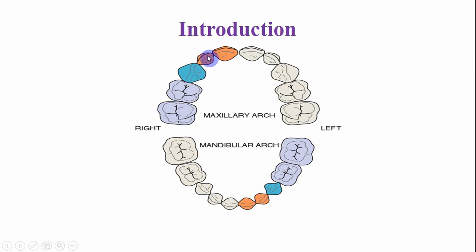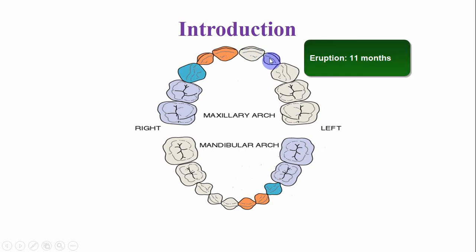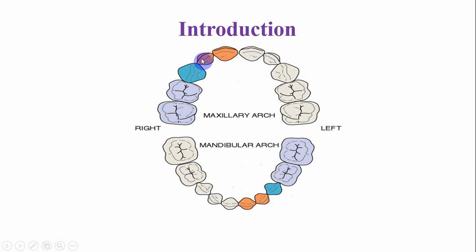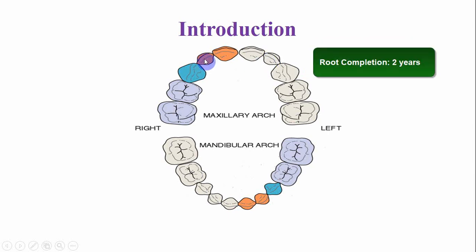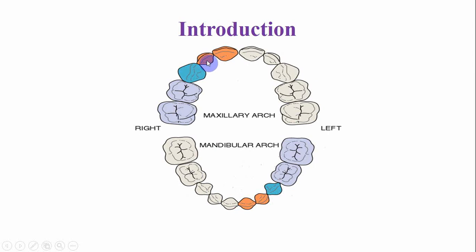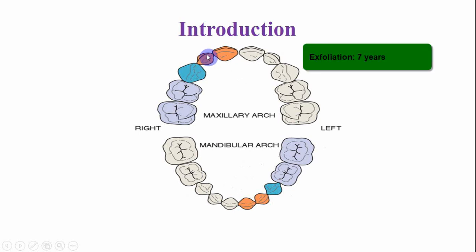The crown is smaller in all dimensions if you compare it with the central incisor. The lateral incisors emerge into the oral cavity at the age of around 11 months, and the root of these teeth is completed by the age of 2 years. These teeth remain in service for almost 6 years after eruption and are eventually replaced by the permanent lateral incisors by the age of 8 to 9 years.